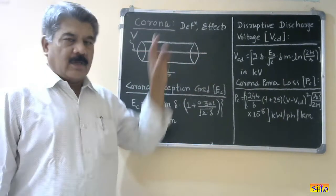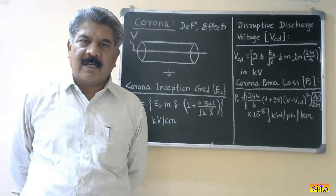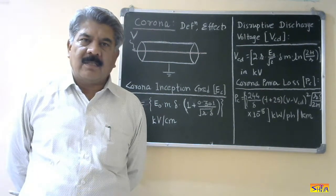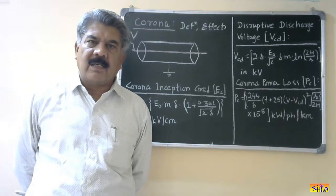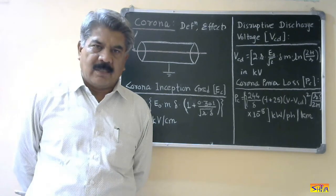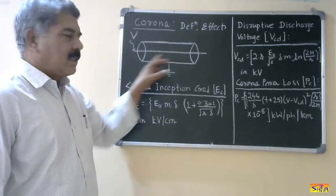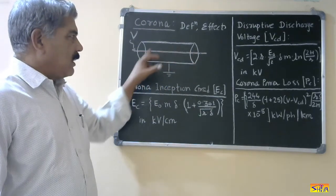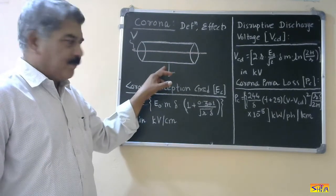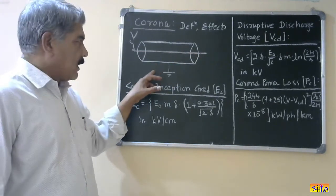Now, let us see what is the definition of corona. It is the self-sustained discharge occurring on the surface of a conductor or electrode in which the air surrounding the conductor or electrode gets ionized. To explain this, I have considered a simple diagram. This is the conductor, and surrounding this conductor there is a cage — a metallic cage that is not touching the electrical conductor.